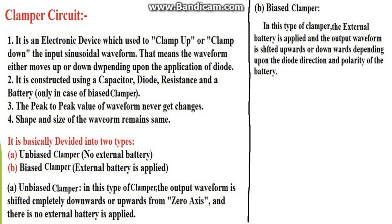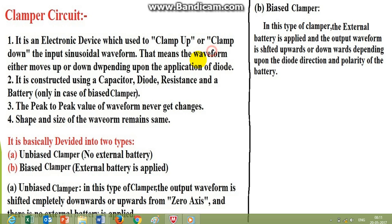The clamper is constructed using a capacitor, diode, and resistance. The capacitor is compulsory and will always be in series with the input waveforms. The diode will always be in shunt with the input — or you can say with the output. A battery is used only in the case of a biased clamper; in an unbiased clamper, only the capacitor, diode, and resistance are required.